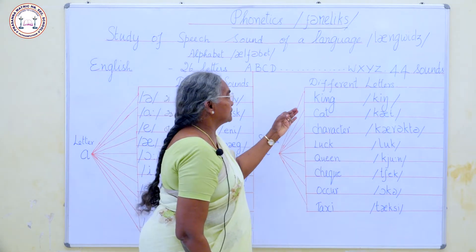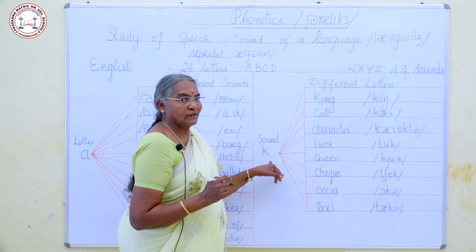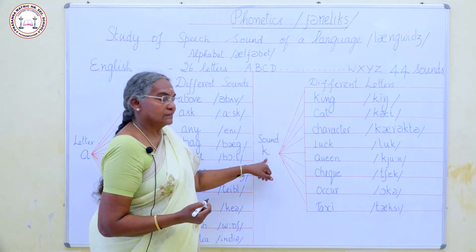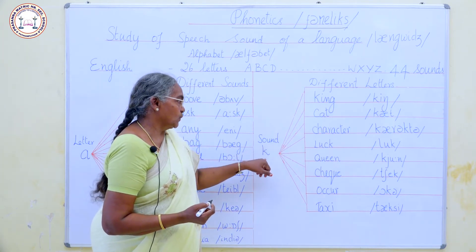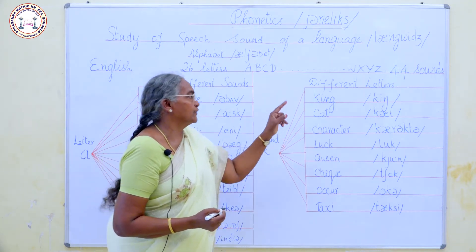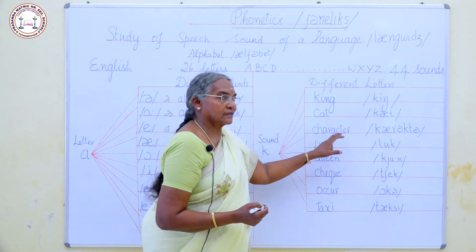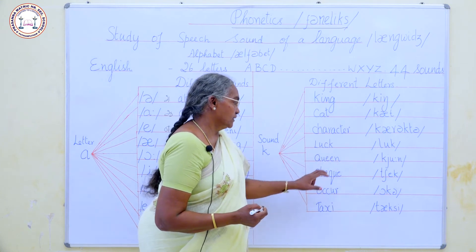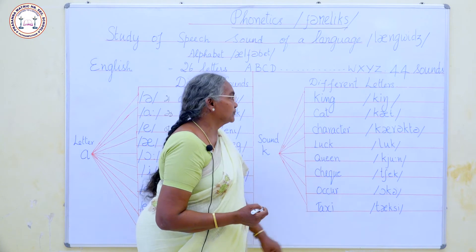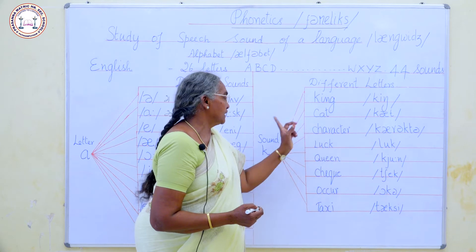Sometimes the same sound is represented by different letters. Let us see the K sound. The sound is the same in all these words, but the letters are different: king, cat, character, luck, queen, check, akkar, taxi. All these different letters produce the same K sound.